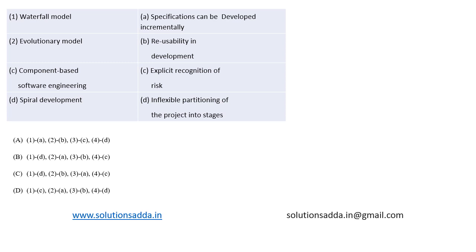This is a question from software engineering. We are asked to match the following: we have Waterfall, Evolutionary, Component-based Software Engineering, and Spiral Model on the left. On the right side we have: specification can be developed incrementally, reusability in development, explicit recognition of risk, and inflexible partitioning of the project into stages. Let's see them one by one.